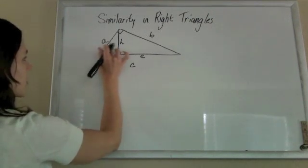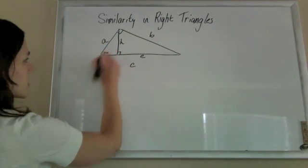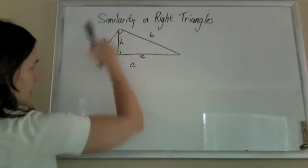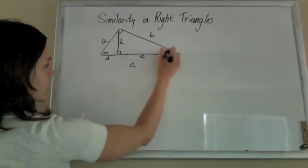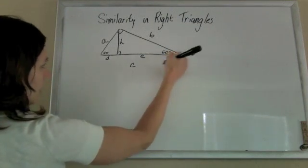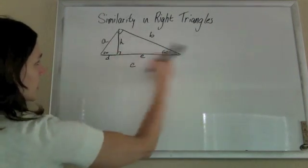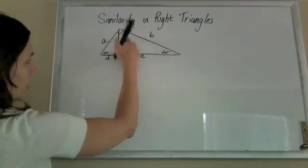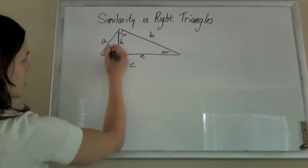I know that they're similar because, let's say I knew this one was 30 degrees, then I would know that because there's 180 degrees in the entire triangle, that this would have to be 60, so there's 180 degrees in this triangle, so this would have to be 30. So they're all 30, 60, 90 triangles, right?